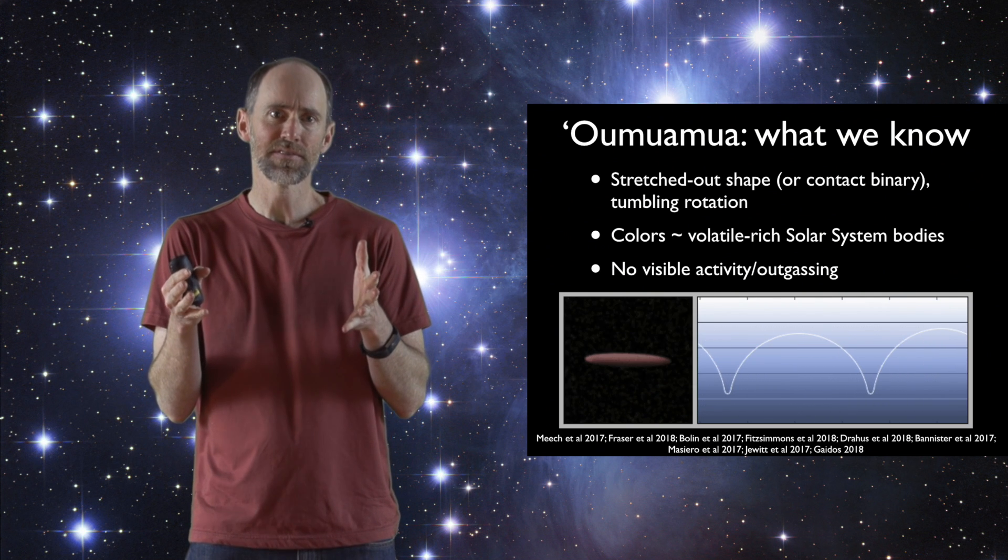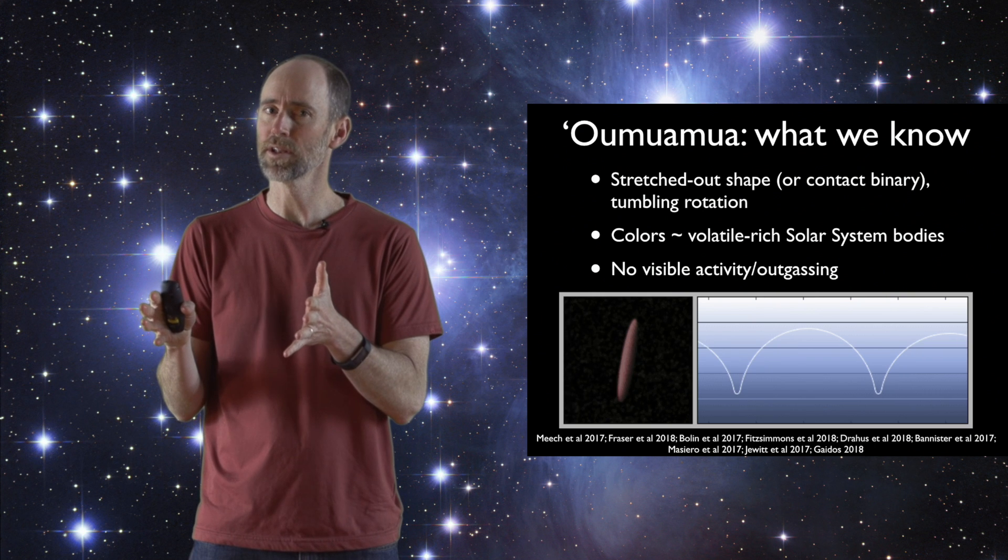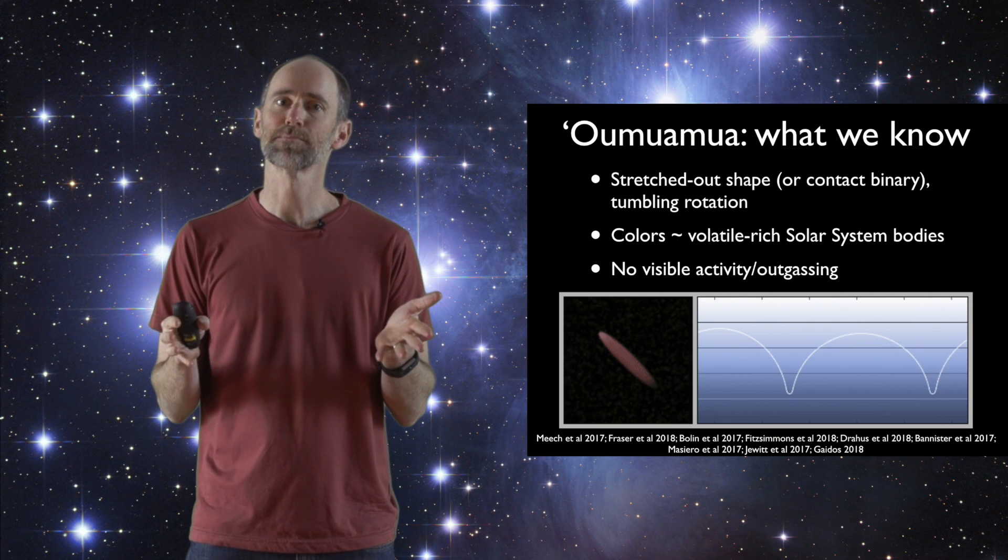So this kind of combination of looking like a comet but not behaving like one is one of the mysterious aspects of this object.